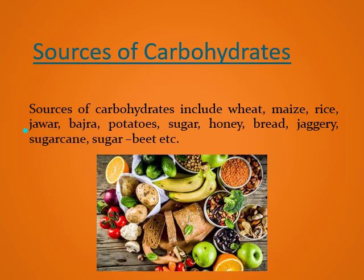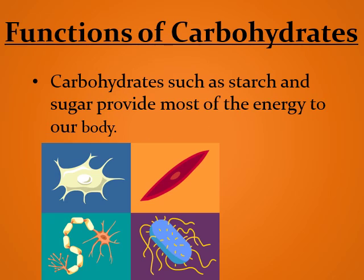Sources of carbohydrates include wheat, maize, rice, jowar, bajra, potatoes, sugar, honey, bread, jaggery, sugarcane, and sugar beet. Carbohydrates such as starch and sugar provide most of the energy to our body. They are the cheapest source of energy, and they also play an important role in the structure and function of our body cells.